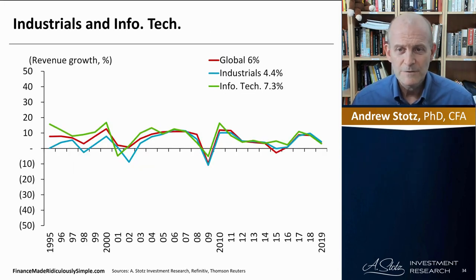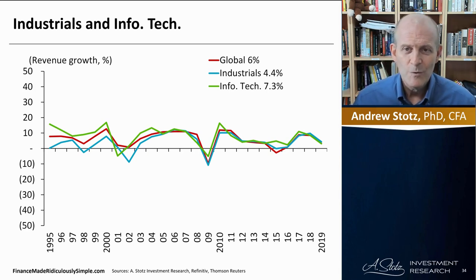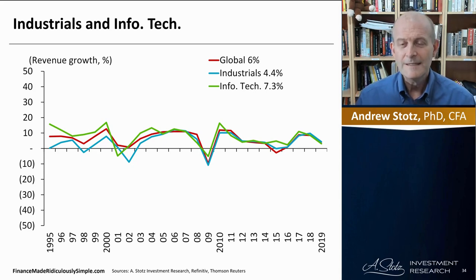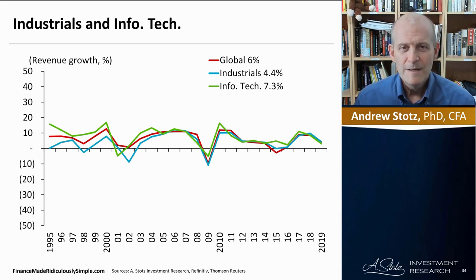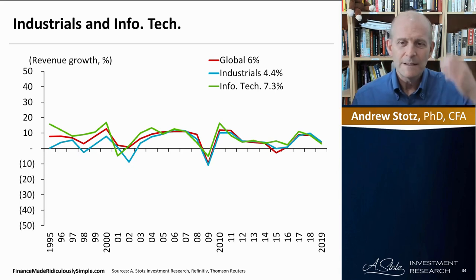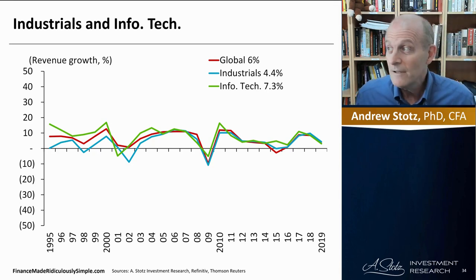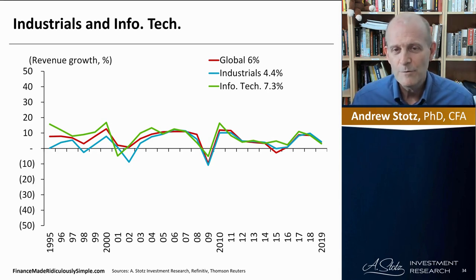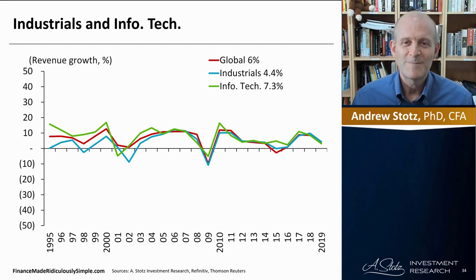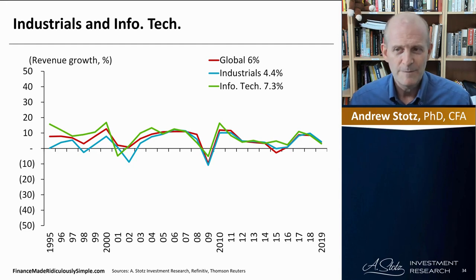Let's look at industrials versus infotech. They're moving almost in lockstep with the overall global average — partly because industrials has the largest number of companies, so it tends to move in line with the global average. Something very fascinating: the revenue growth of the infotech sector is also in line with the global average. You'd think there's an infotech boom going on, but it's not showing in these revenue growth numbers — keep an eye out for that point in the next couple of sections.